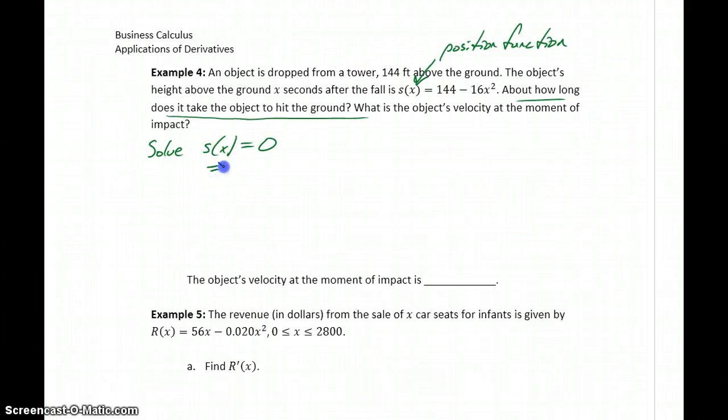Solving s of x equal to zero gives us x equals plus or minus three, so either after positive three seconds or negative three seconds our object hits the ground. A time of negative three seconds just doesn't really make any sense, so we can discard that solution and say that our object hits the ground after three seconds.